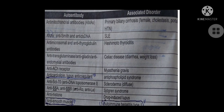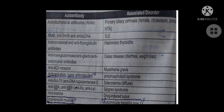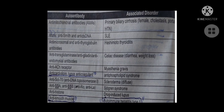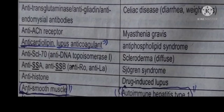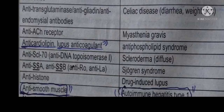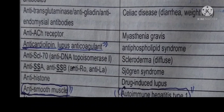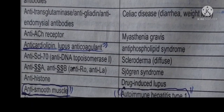Fourth, anti-transglutaminase, anti-gliadin, and anti-endomysial antibodies are associated with celiac disease. Fifth, anti-acetylcholine receptor antibodies are diagnostic for myasthenia gravis.